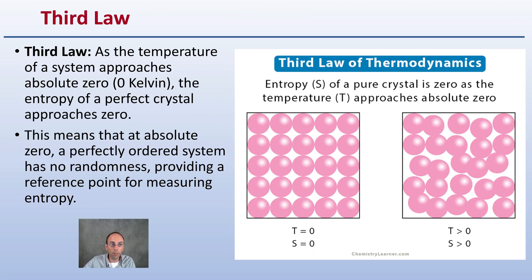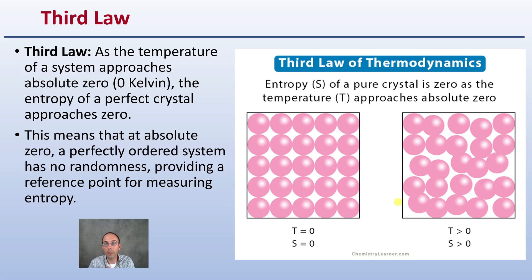The third law — our fourth in total, counting the zeroth — states that as the temperature of a system approaches absolute zero, which is zero Kelvin, the entropy of a perfect crystalline structure approaches zero as well. At absolute zero, a perfectly ordered system has no randomness, providing a reference point to measure entropy from. When everything stops moving, you get that crystalline structure. Up until that point, even at very cold temperatures, there's still some movement going on.